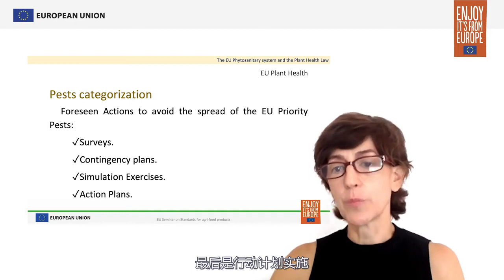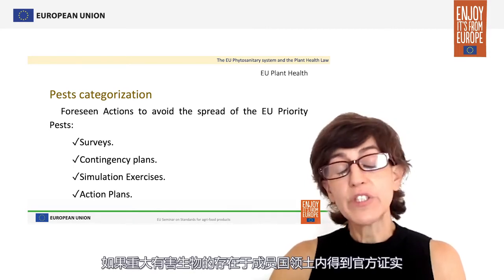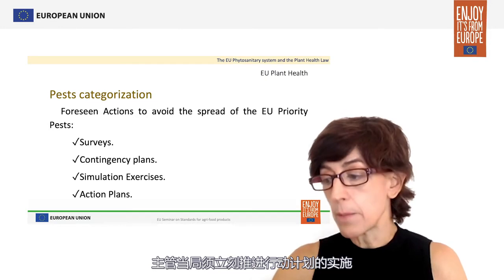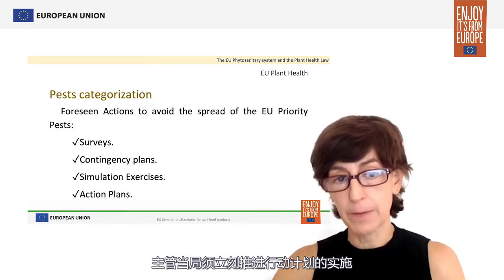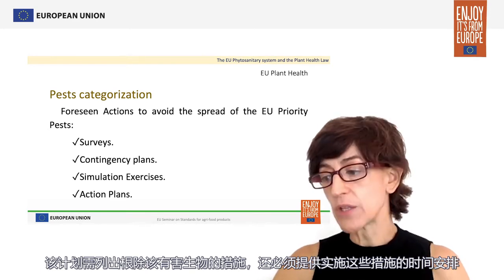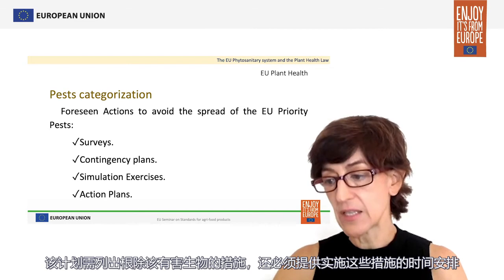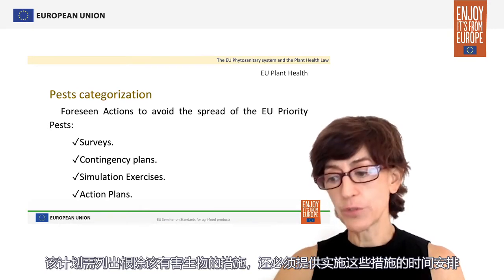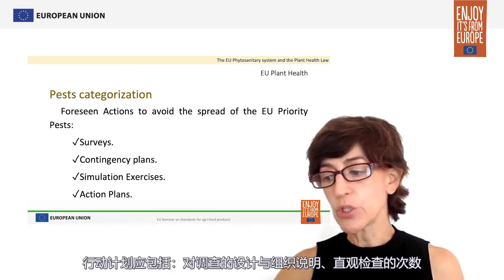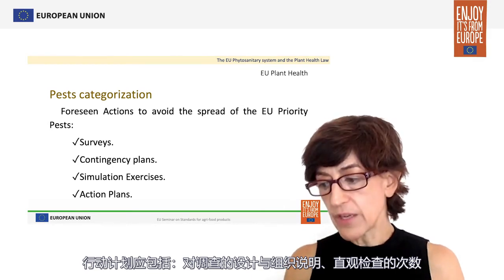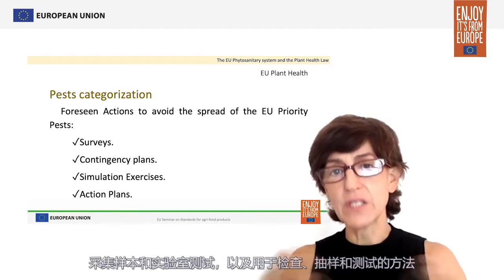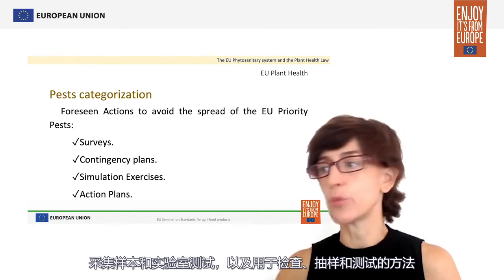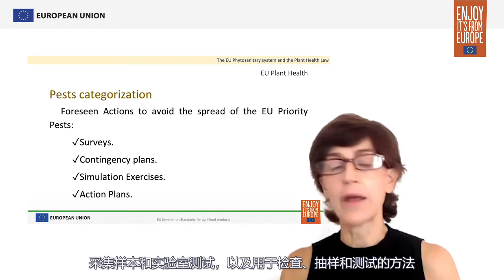Finally, we have action plans. Where the presence of priority pests is officially confirmed in the territory of a member state, the competent authority must immediately adopt an action plan. This plan sets out the measures for the eradication of that pest and provides a time schedule for the application of those measures. The action plan shall include a description of the design and organization of surveys, the number of visual examinations and samples to be taken, laboratory testing, as well as the methodology to be used for examination, sampling and testing.